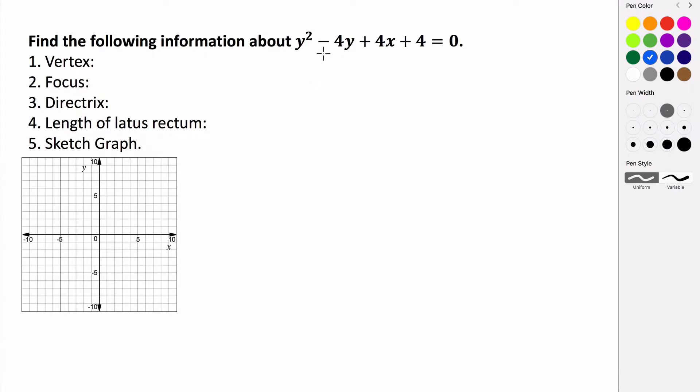So because it is a y squared variety parabola, that tells me that our graph should open to the left or right.